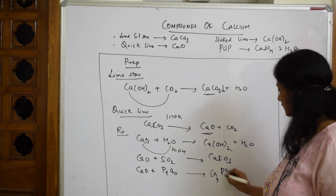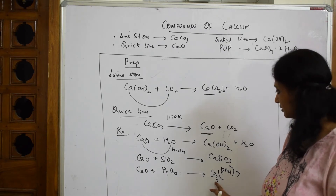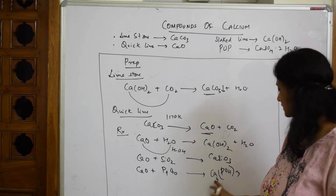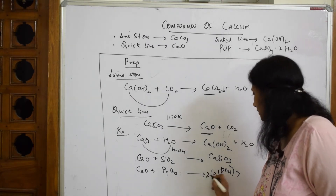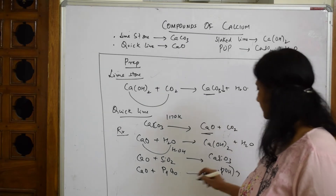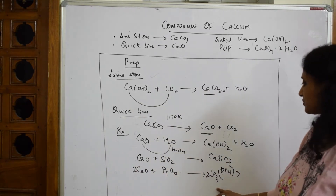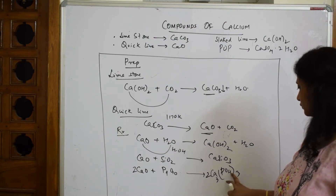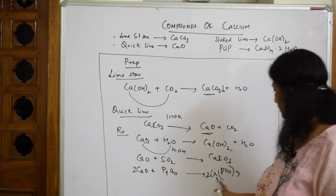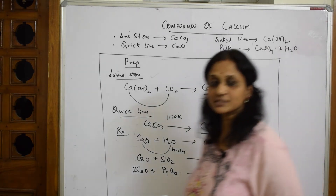To balance the reaction of CaO with P₄O₁₀ to form calcium phosphate: phosphate has valence 3 and calcium has valence 2. Balancing gives 6CaO + P₄O₁₀ → 2Ca₃(PO₄)₂. Check oxygens: 4×3 = 12, and 10 + 2 = 12. Phosphorus: 3 each side. Balanced.